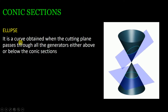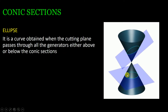The first conic section is the ellipse. An ellipse is a curve obtained when the cutting plane passes through all the generators either above or below — that is, on either nappe. When you cut the upper or lower nappe with an inclined plane, the curve you get is called an ellipse. One question: which curve is this other one? A circle — yes, circle is also an ellipse; rather, it is a special case of ellipse.